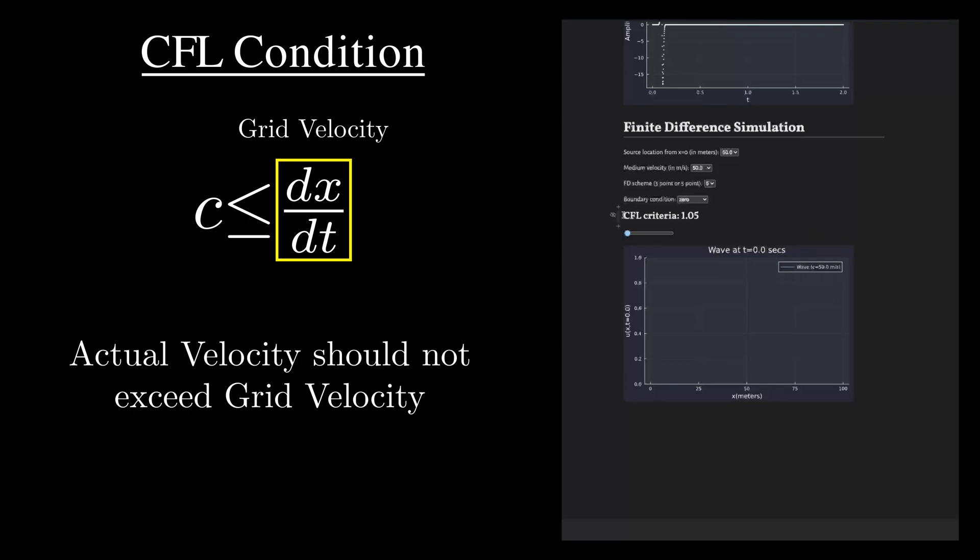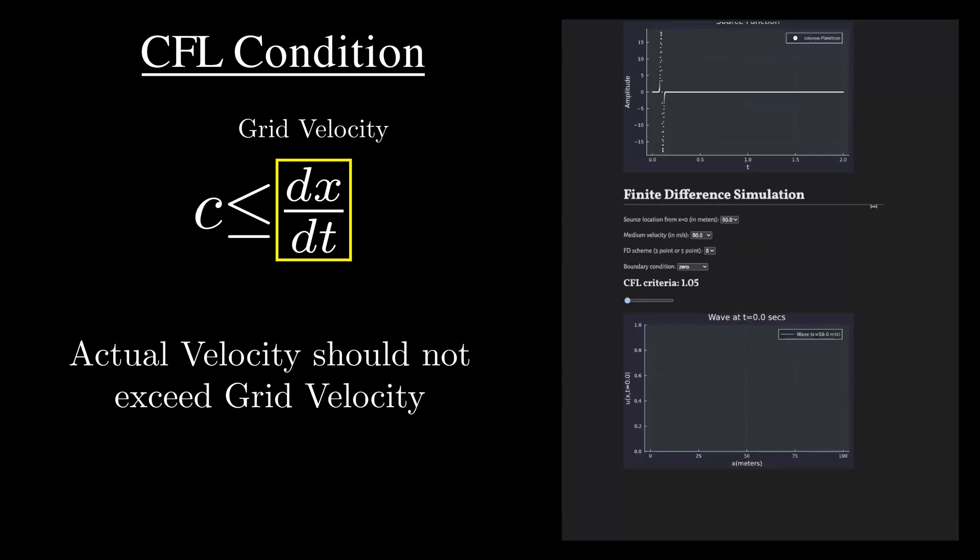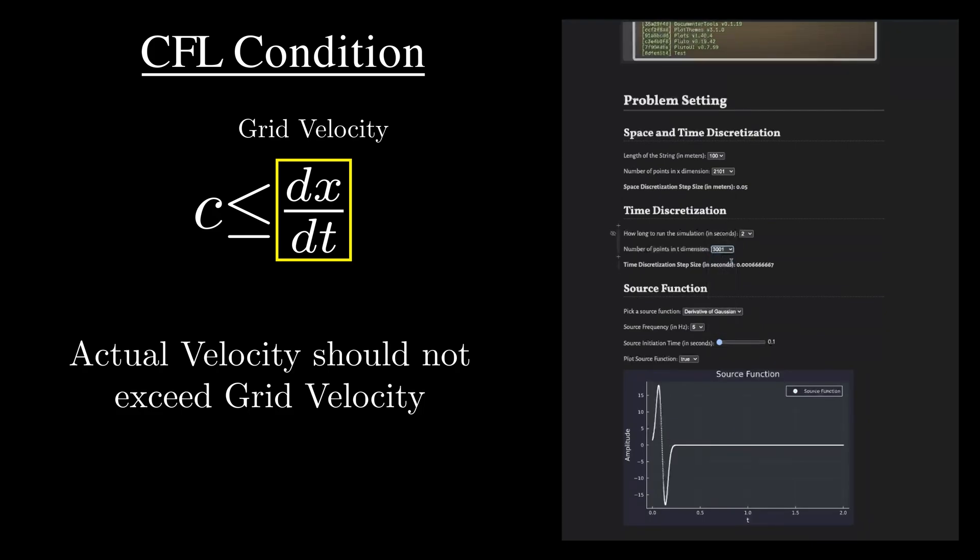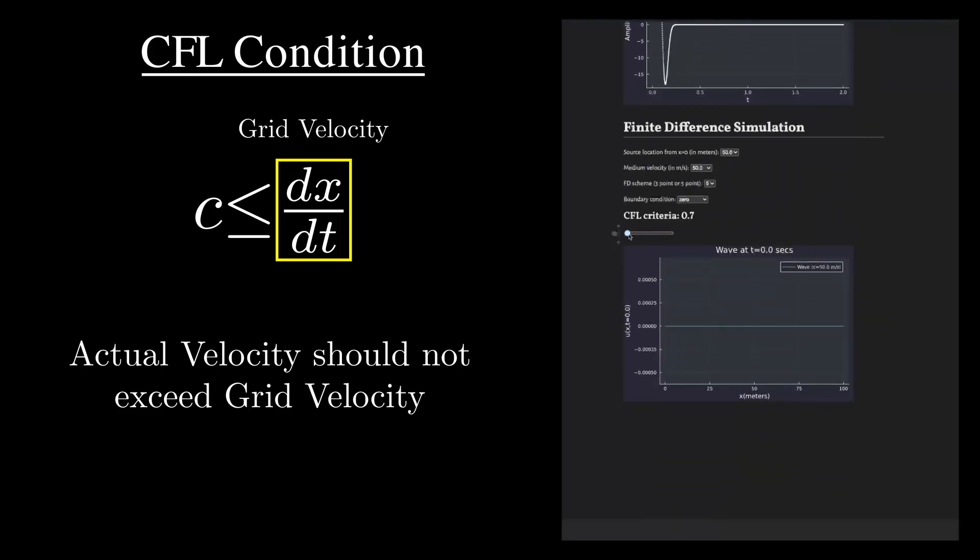Alright, so after incorporating the CFL calculation in the notebook, I can check at a glance whether the solution would be stable or not. And you can see here that it was greater than 1. Looking at the formula, I can resolve this issue by decreasing the step size in the temporal domain. Now the solution is stable again and the accuracy is even better.